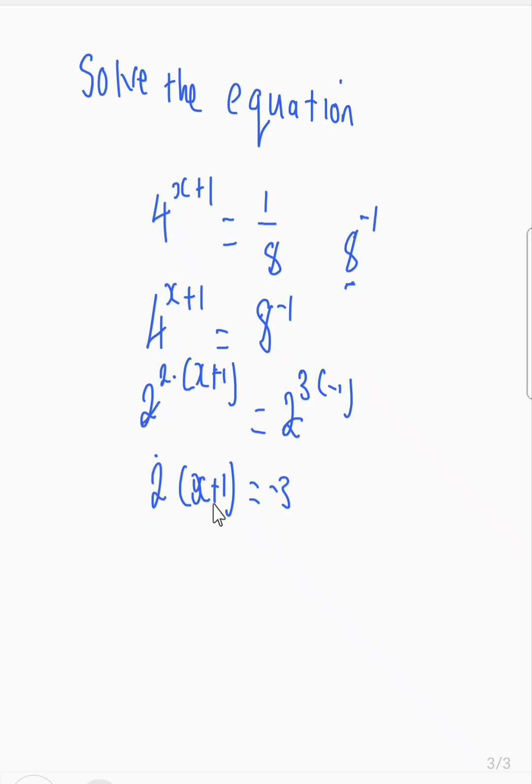So you multiply 2 with everything inside the brackets there. So 2 times x, we are getting 2x, and 2 times positive 1, we are getting positive 1, which equals negative 3. So the 1 is going to the other side.